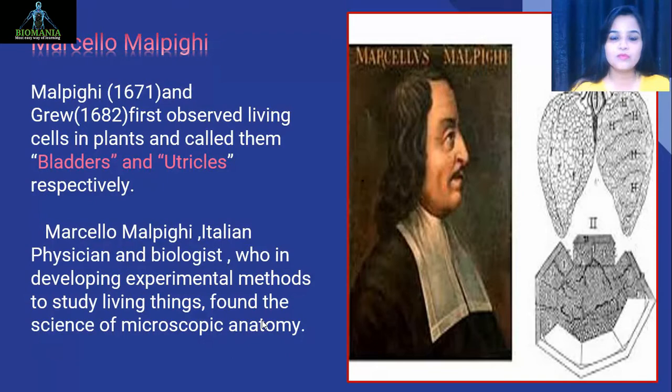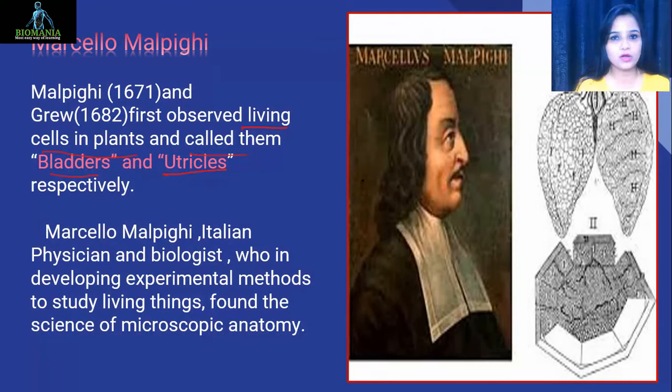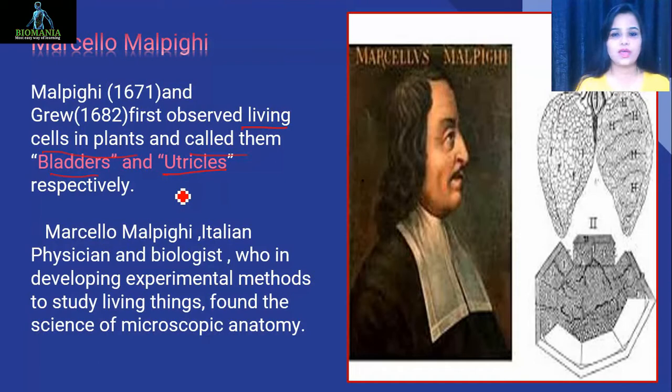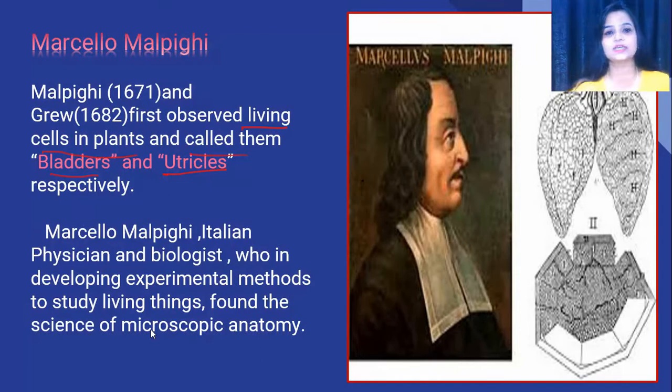Another great scientist is Marcello Malpighi, and one more is Nehemiah Grew. They first observed living cells in plants and called them bladders and utricles respectively — these names are important. Malpighi named them bladders, and Grew named them utricles. Marcello Malpighi was an Italian physician and biologist who developed the experimental method to study living things, founding the science of microscopic anatomy.